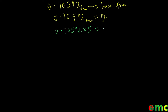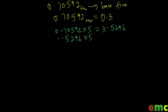Our whole number part is 0. Zero in base 10 is also the same as zero in base 5, so the whole number will also be zero in base 5. So we have our 0.70592 — the decimal part — continuously multiplied by the new base we are converting to, which is 5 in this case. Doing that gives us 3.5296.